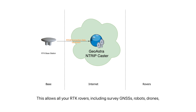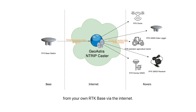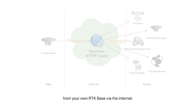This allows all your RTK rovers, including SurveyGNSS, robots, drones, agricultural equipment, and GNSS receivers to receive correction data from your own RTK base via the internet.